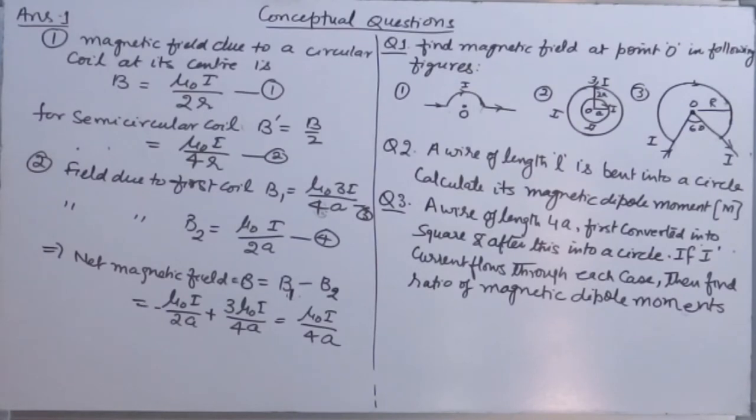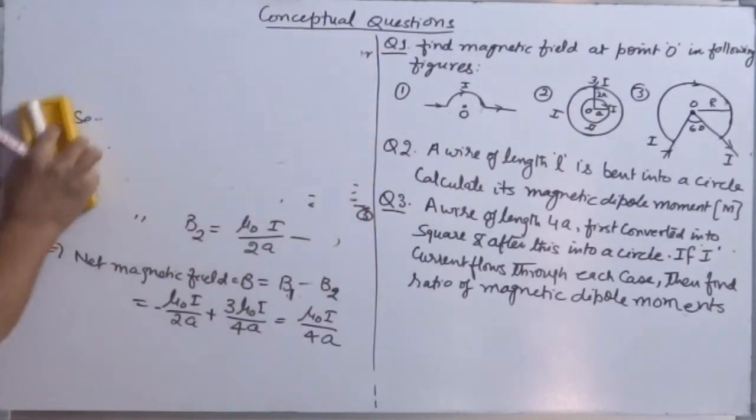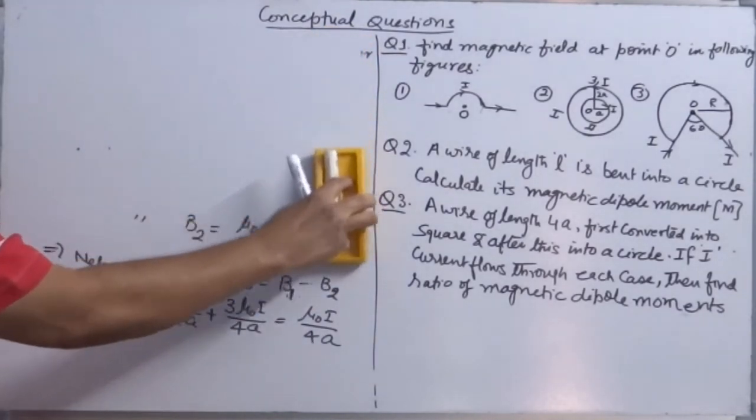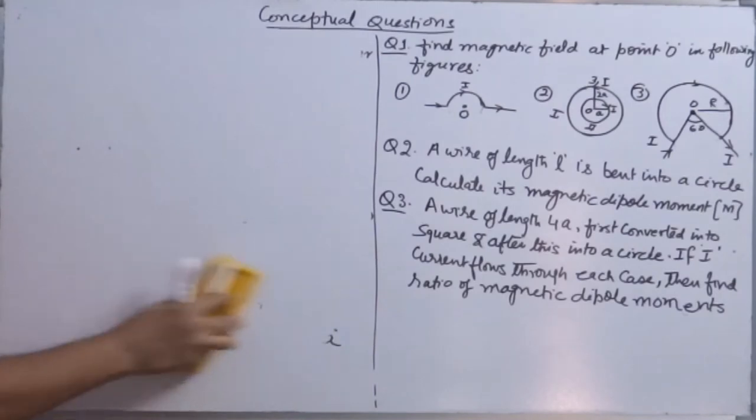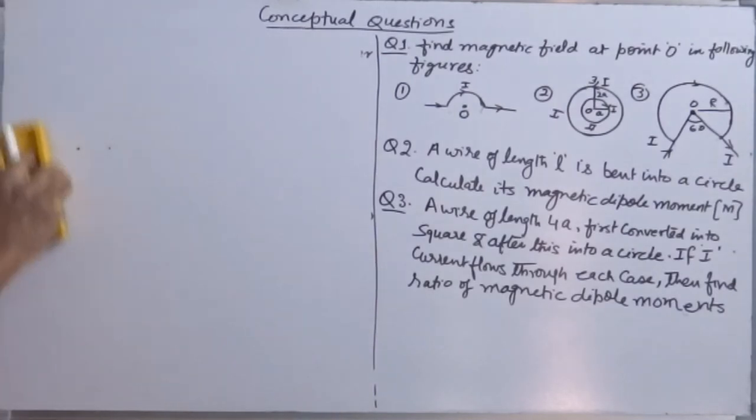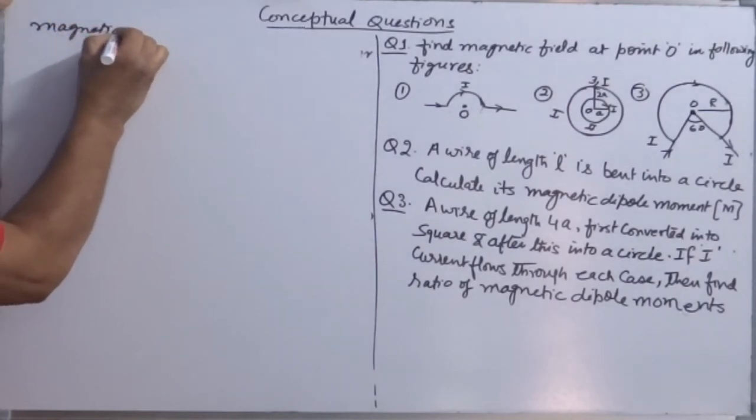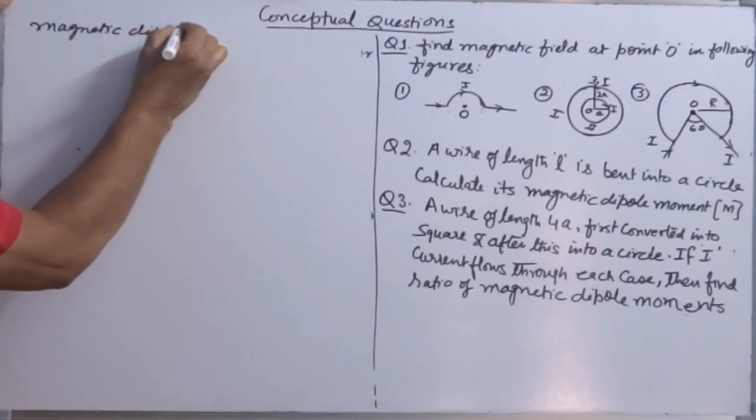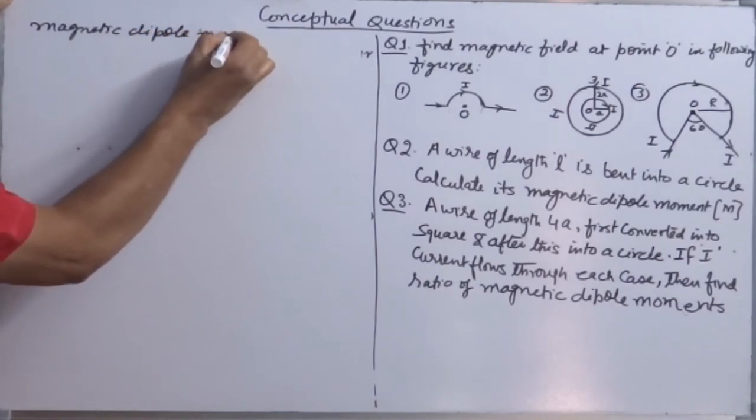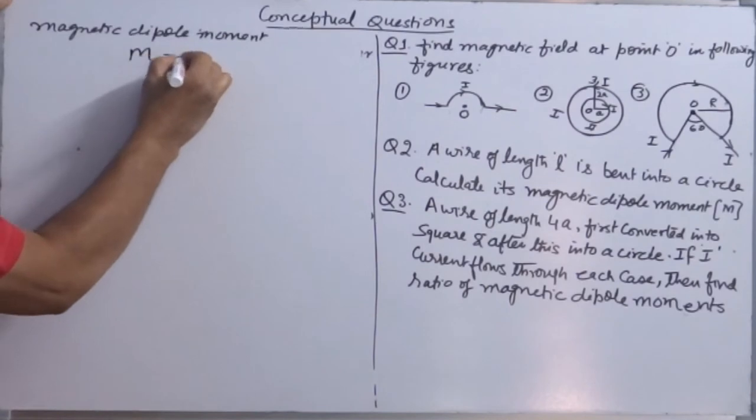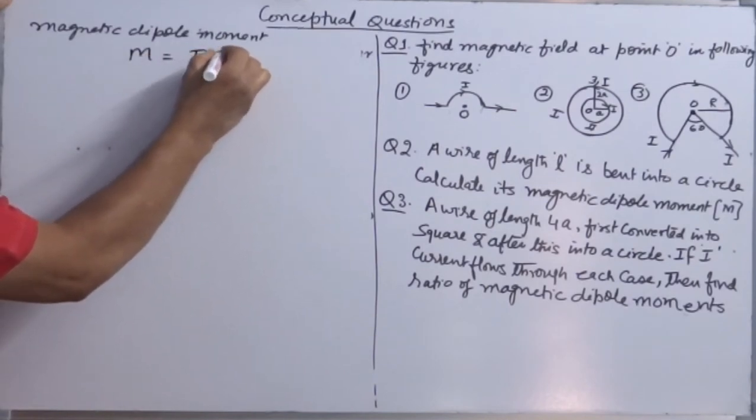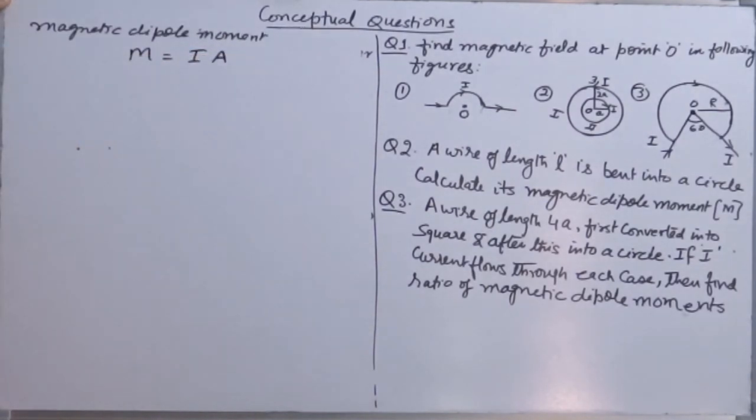Similarly, you can be asked to calculate magnetic dipole moment also. So adding one more question, calculate magnetic dipole moment. Use the formula. What is the formula for magnetic dipole moment? M = IA.